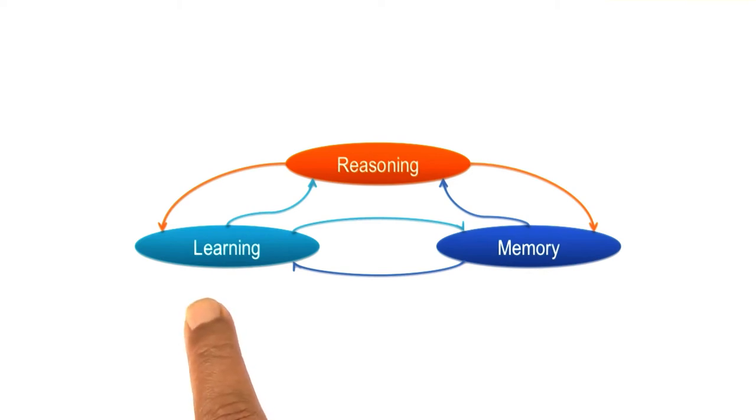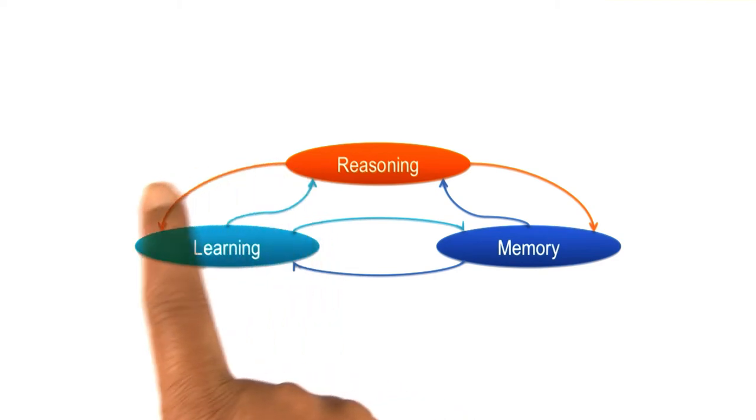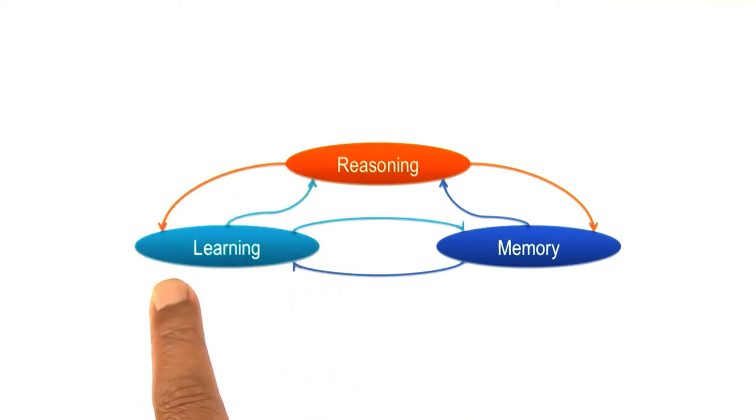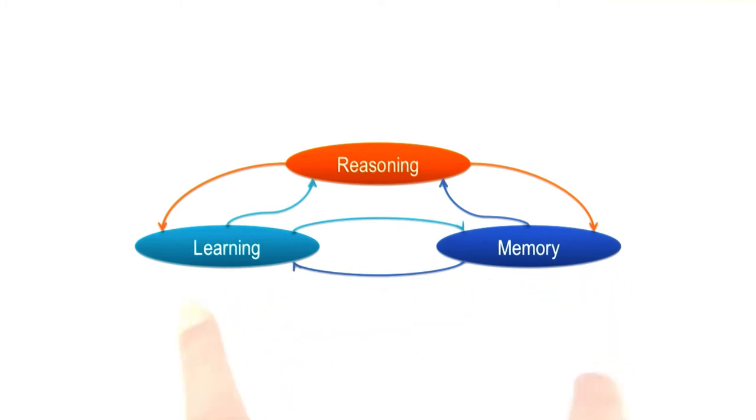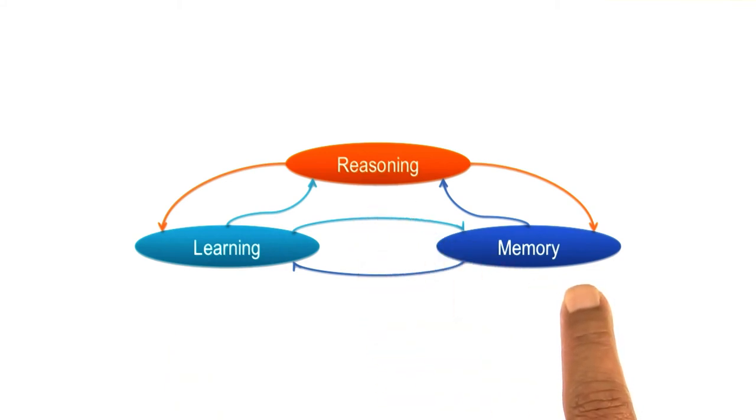We learn so that we can reason. The results of reasoning often result in additional learning. Once we learn, we can store it in memory. However, we need knowledge to learn. The more we know, the more we can learn. Reasoning requires knowledge that memory can provide access to. The results of reasoning can also go into memory.